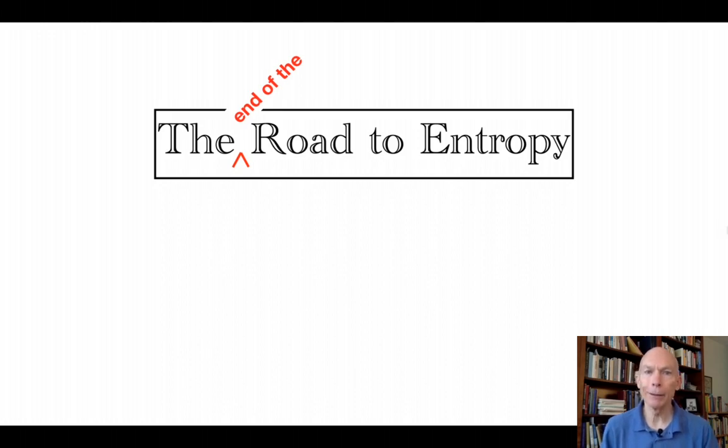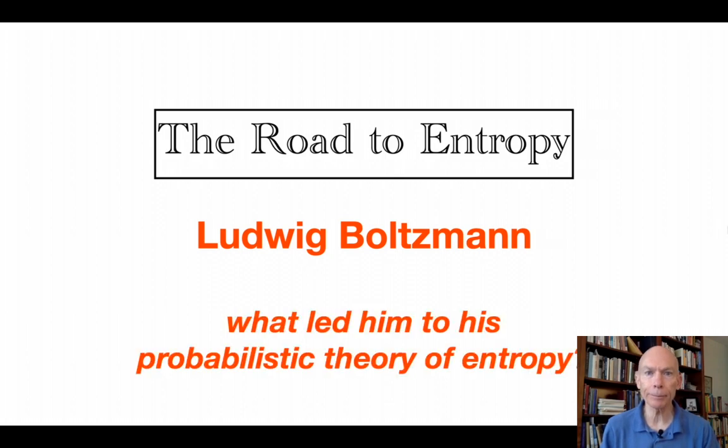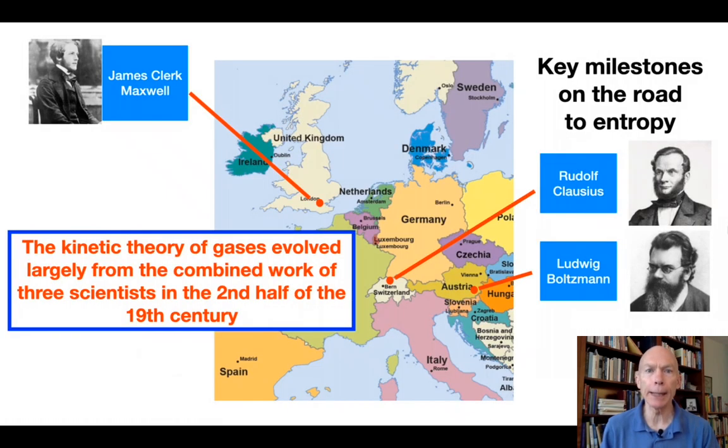Hi, I'm Bob Hanlon, here to talk to you today about the end of the road to entropy. And the end of the road came with Ludwig Boltzmann, and there's a specific question I want to address with regards to Boltzmann. The question is, what led him to his probabilistic theory of entropy? Let's find out.